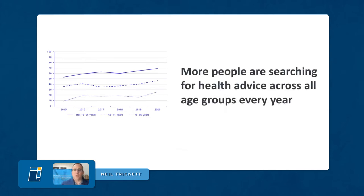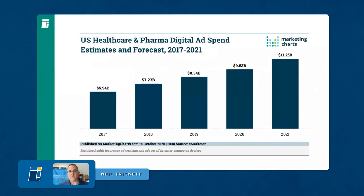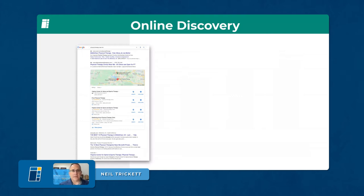More people are searching for health advice across all age groups every year. If you look at the graph on the left, from age 16 up to 75–85 years old, they're all trending upwards in the amount of people using search engines to get health advice. Looking at digital advertising spend in U.S. healthcare: back in 2017 it was just under six billion dollars, and by last year it was over eleven billion dollars — almost double in that short time span.